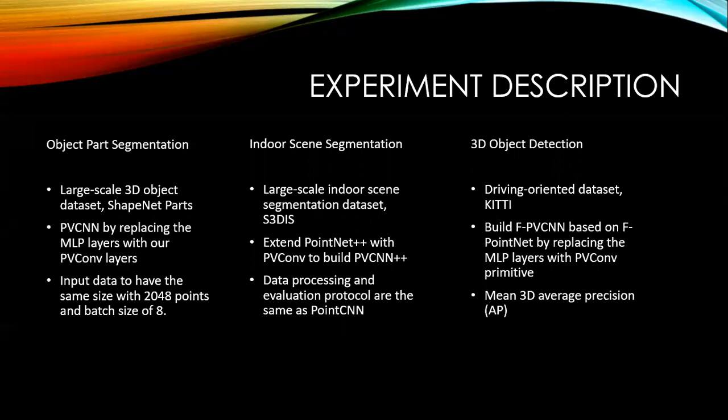Finally, for 3D object detection, they experimented on the driving-oriented dataset, KITTI. They evaluate all models for 20 times and generate the mean 3D average precision. They build a PV-RCNN based on PointRCNN by replacing MLP layers with PV-CNN primitive.